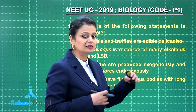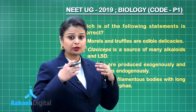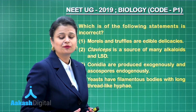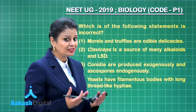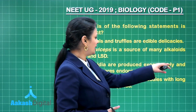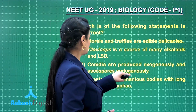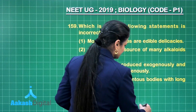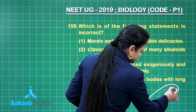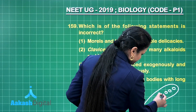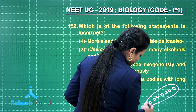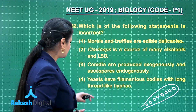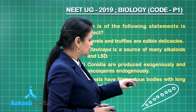Conidia are produced exogenously — these are mitospores and they are not formed inside a sporangium, so they are exogenous in origin. Ascospores are formed endogenously; they are sexual spores formed inside a sac-like structure. Generally eight ascospores are formed, so they are endogenous in origin.